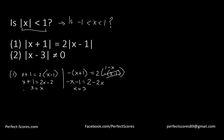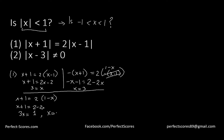Now looking at the nature of these results: is x between negative 1 and 1? x = 3 gives us 'no', and x = 1/3 gives us 'yes'. Since it's a yes/no data sufficiency question and Statement 1 gives both a yes and a no, Statement 1 alone is insufficient.